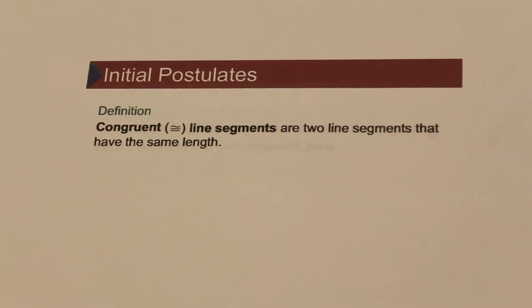So congruency. Line segments being congruent means they have the same shape and size. Well, lines don't really have a shape, they only have a length. So congruent line segments are two line segments that have the same length.